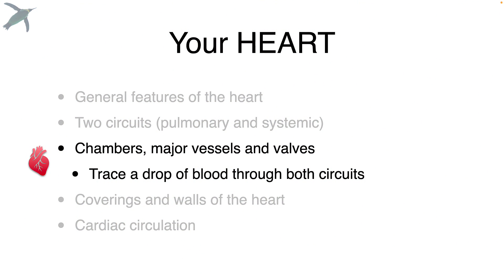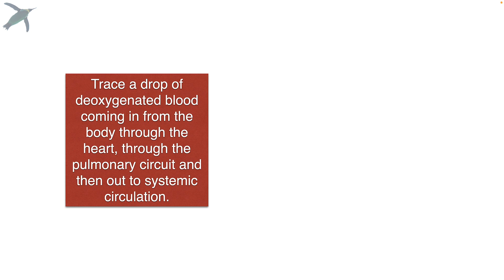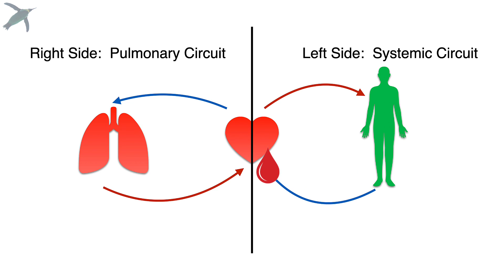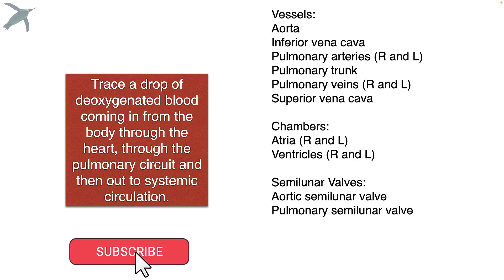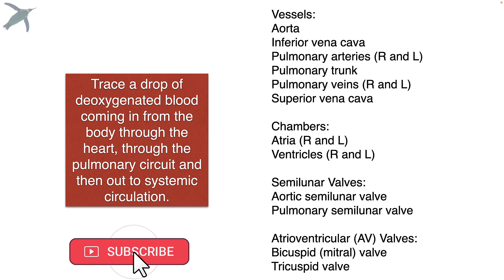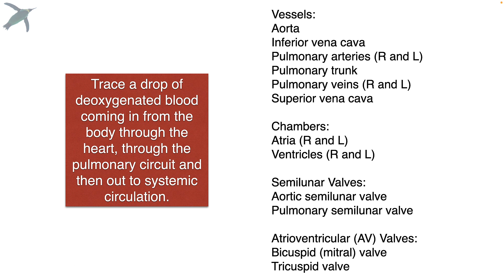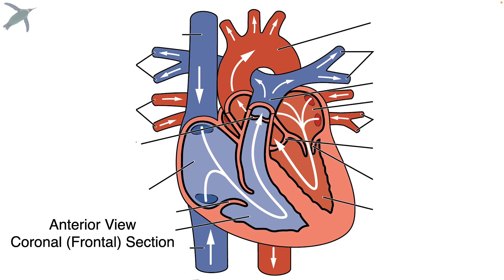Now let's go through the chambers, the vessels, and the valves of the heart. To do this, I'm going to trace a drop of deoxygenated blood coming in from the body, go through the pulmonary circuit, return to the heart, and then move out through the systemic circuit. As we do that, I'm going to go through eight vessels, four chambers, two semilunar valves, and two atrioventricular valves. This is an anterior view, and we're taking a coronal or frontal section through the heart.